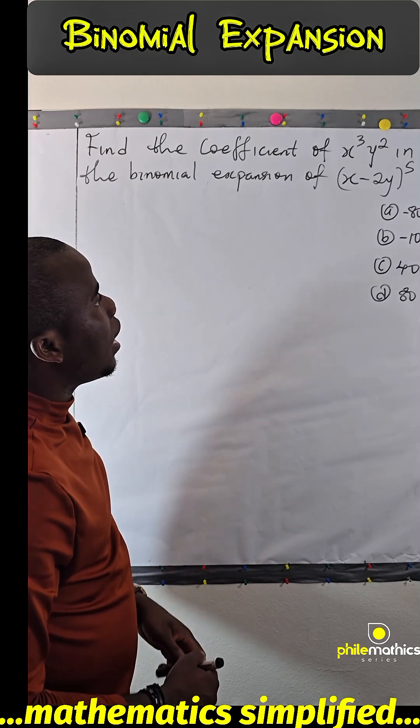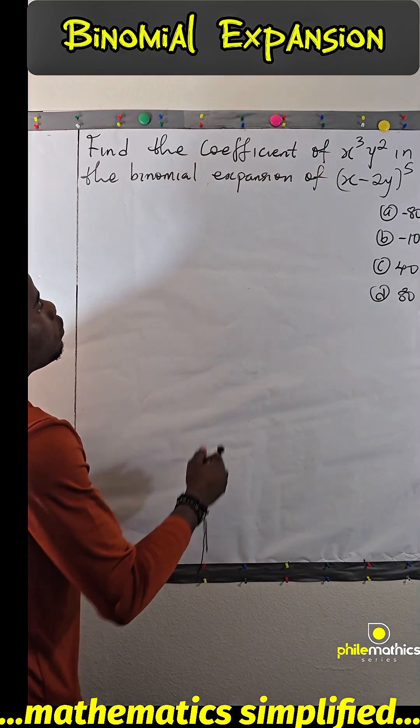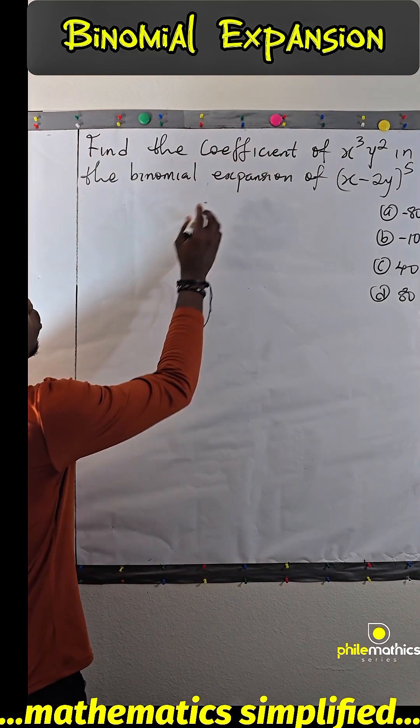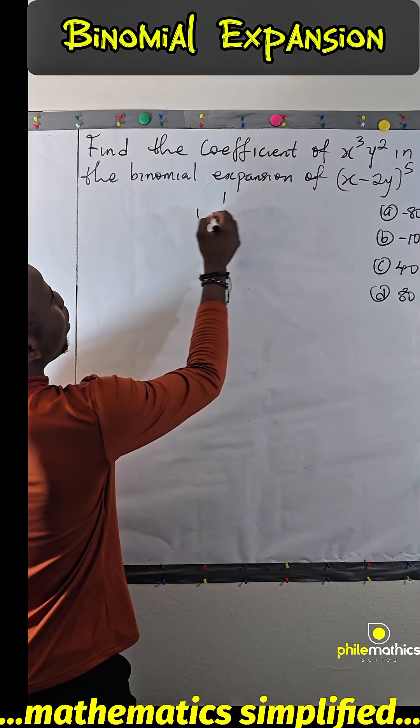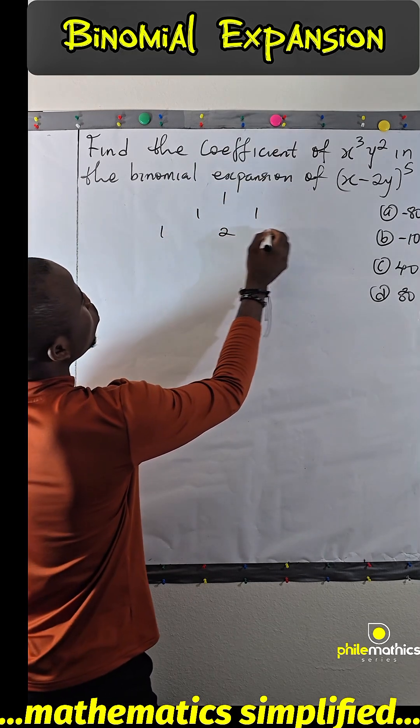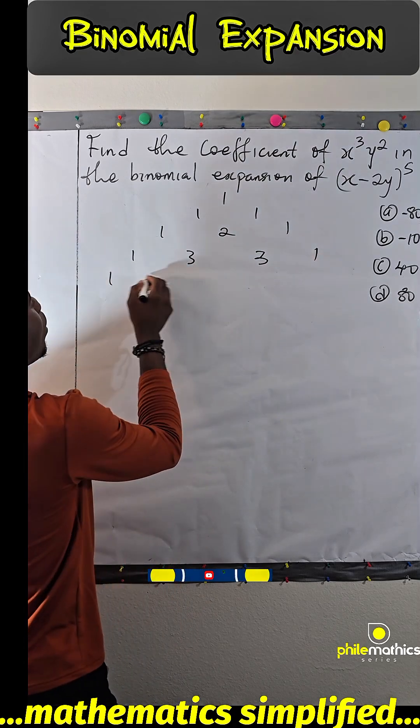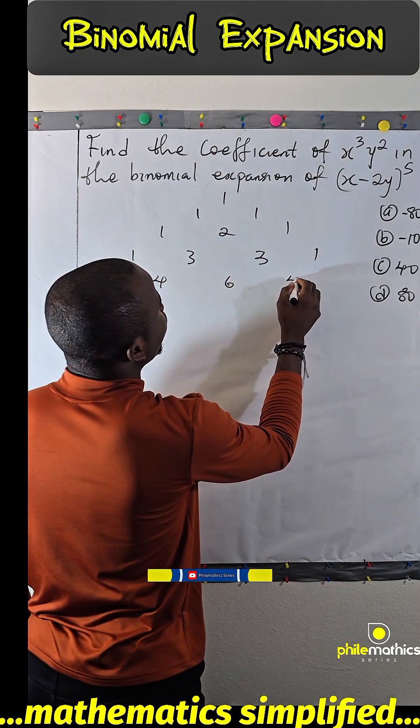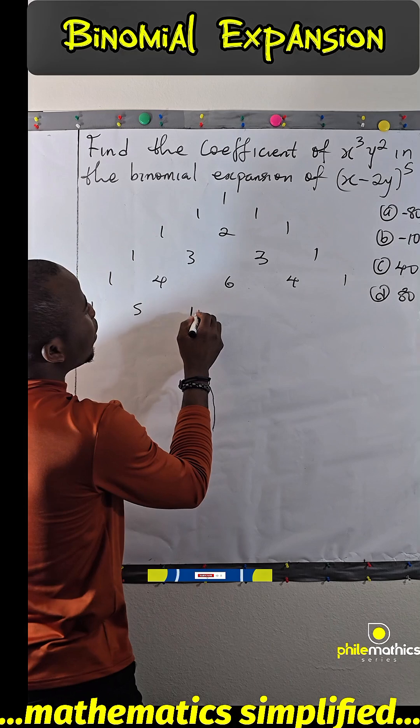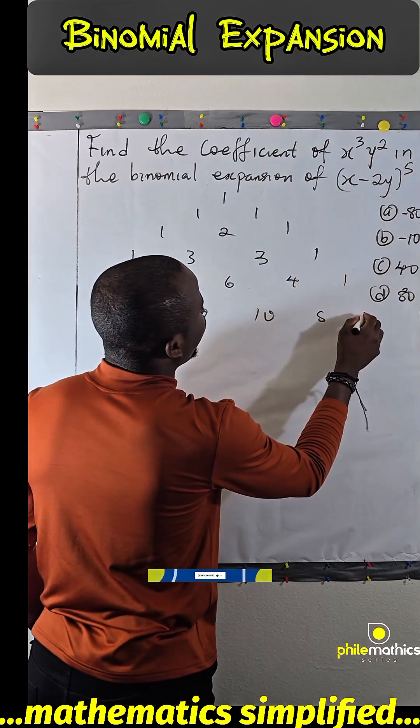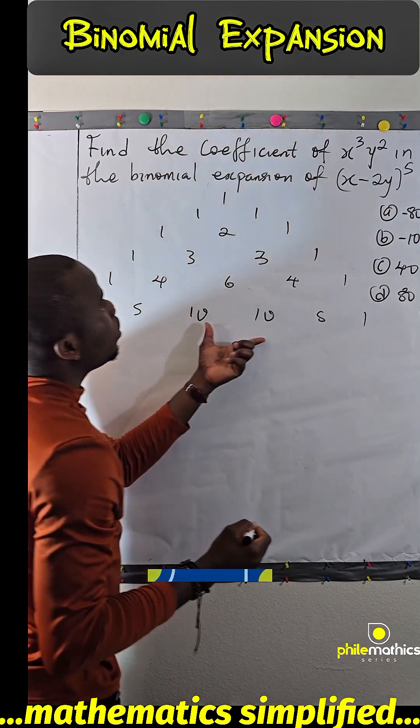If you recall Pascal's triangle: 1; 1, 1; 1, 2, 1; 1, 3, 3, 1; 1, 4, 6, 4, 1; 1, 5, 10, 10, 5, 1. These would be the coefficients when expanding (x - 2y)⁵. There are shortcuts to this, but I'm giving you the full process on how to get this.